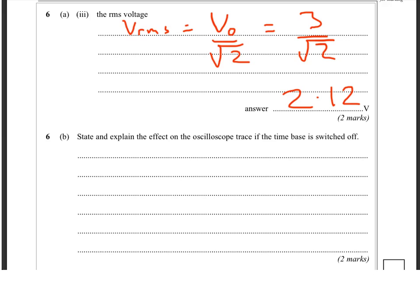The last question says, state and explain the effect on the oscilloscope trace if the time base is switched off. Well, if the time base is switched off, we end up with just that vertical line, don't we? So you need to say a vertical line in the middle. No movement. No horizontal movement. How big is that line? Well, it's twice the peak voltage in height.